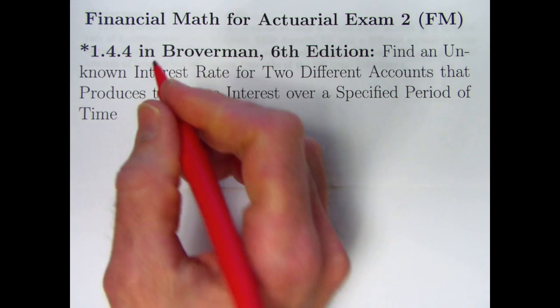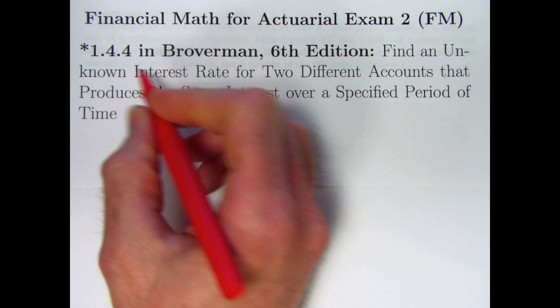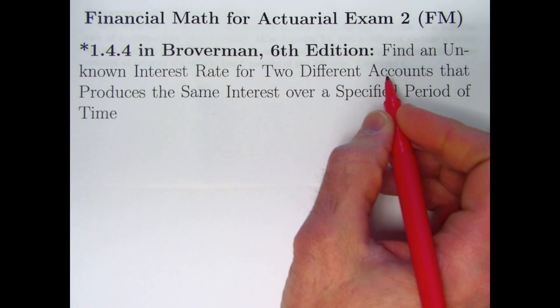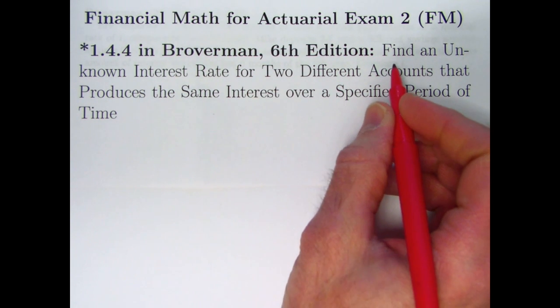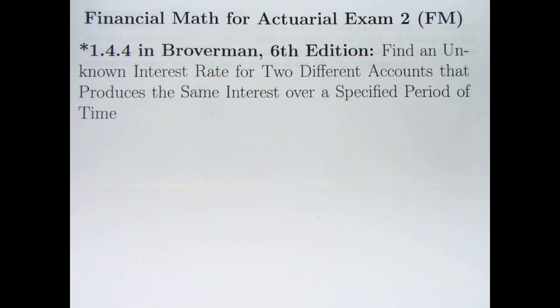In this video, we're going to look at problem 1.4.4, which is a starred problem from Broverman. It is a harder problem, I think, and it's got a longer description. Finding an unknown interest rate for two different accounts that produces the same interest over a specified period of time. That's kind of a mouthful.